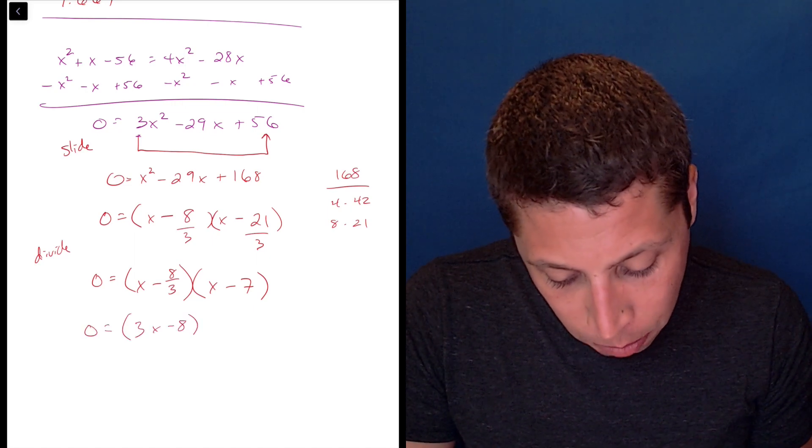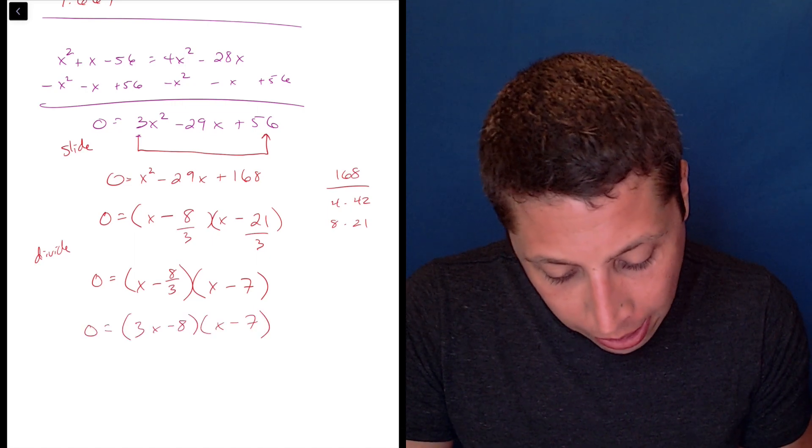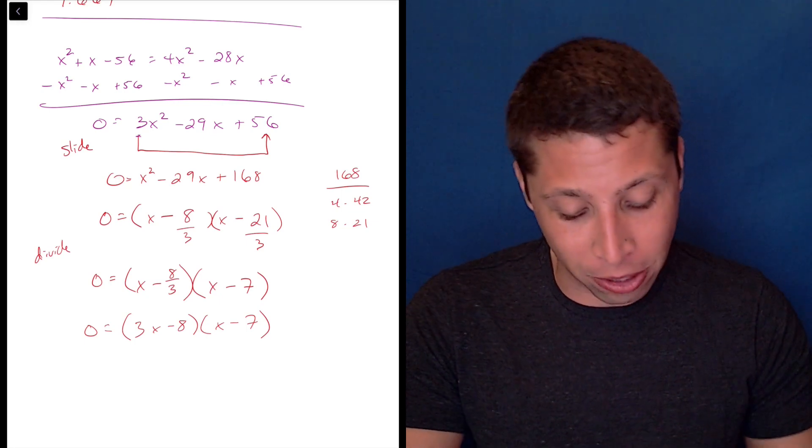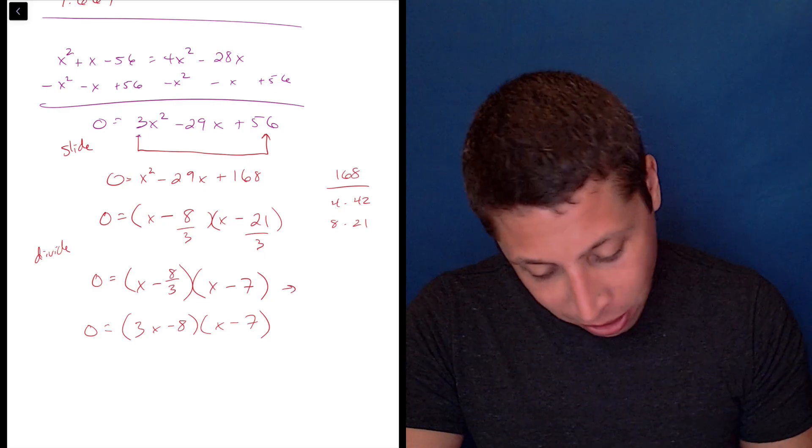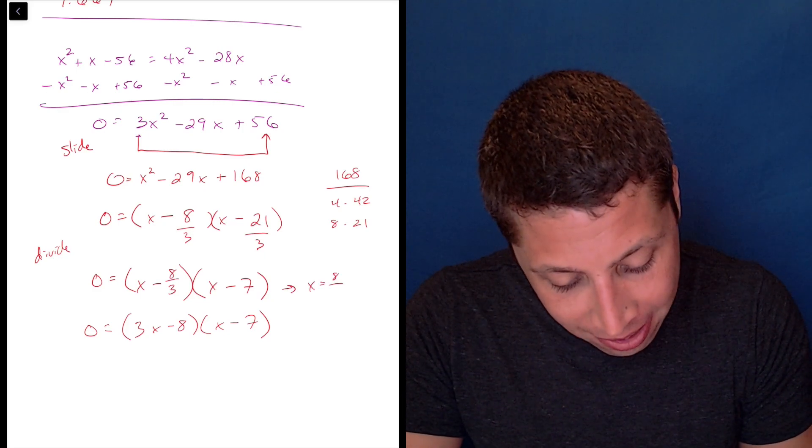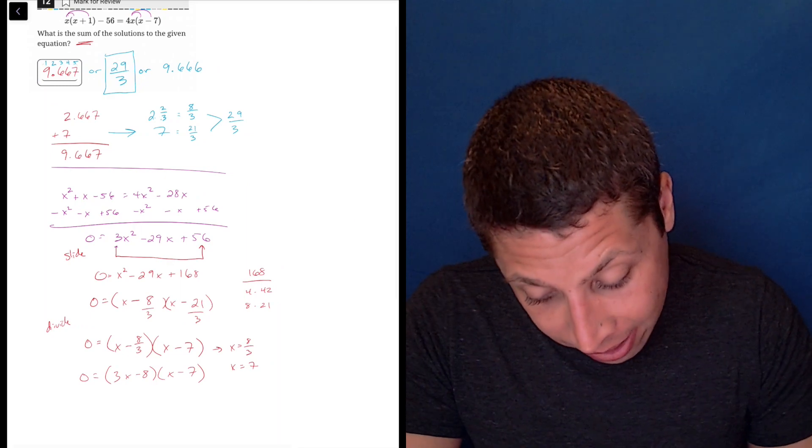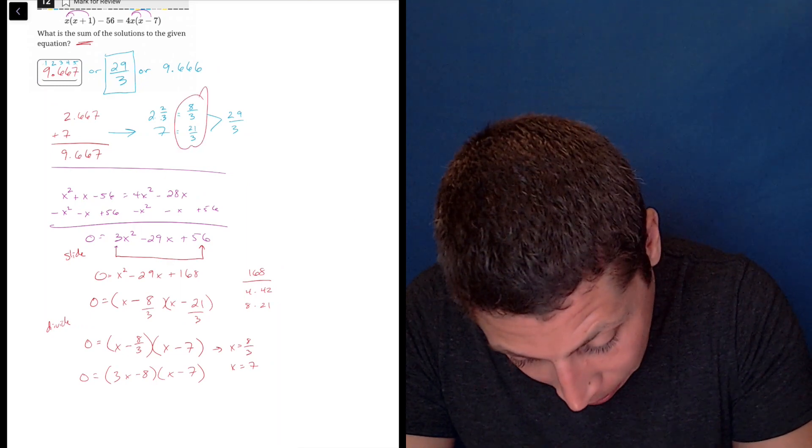Like I said, the other way to write it would be 3x minus 8 and x minus 7. And so that's probably the way your teacher would do it. But in terms of finding x values, this one would do it. It would get me x is equal to 8 thirds, x is equal to 7. And that is exactly what we had before,